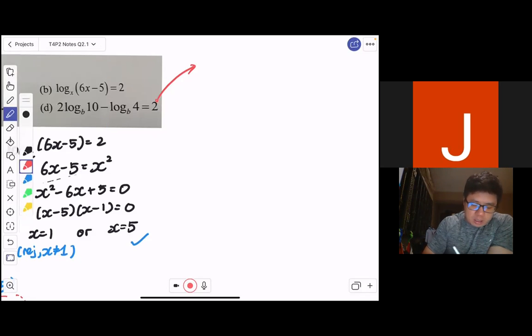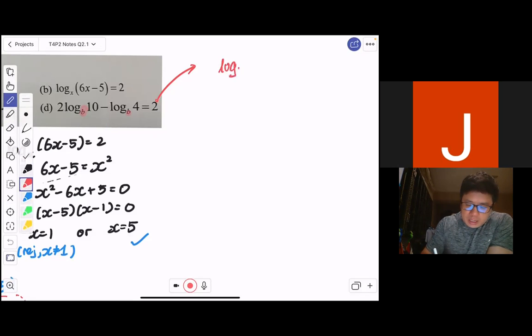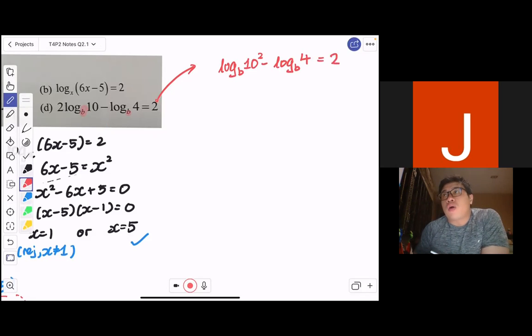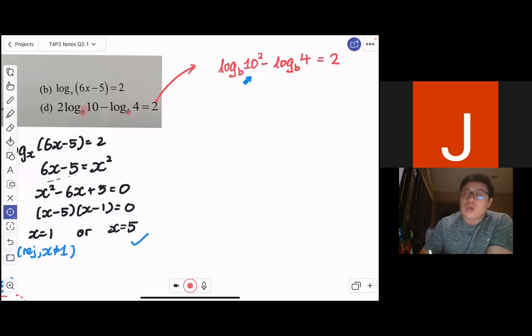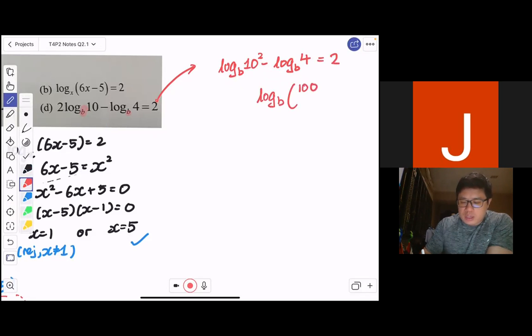So, log_b(10), they have the same base, so all is good. I'm going to write this as log_b(10²) - log_b(4) = 2. Now, using the quotient law of logarithms, if I have a difference of two logarithms with the same base, same coefficient, I can combine them to have log_b(100/4) = 2. Now, 100 over 4 is just a very nice number, which is 25, equals to 2.